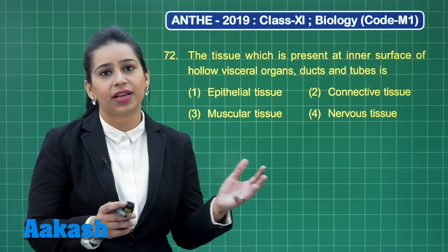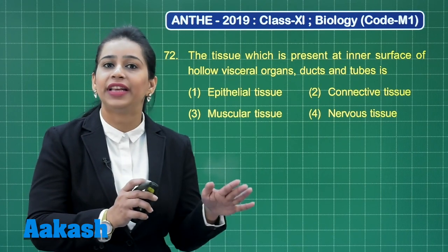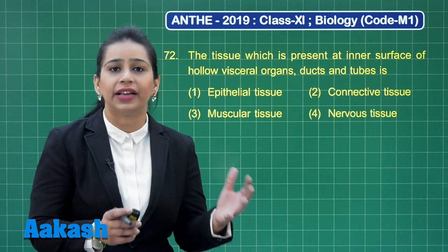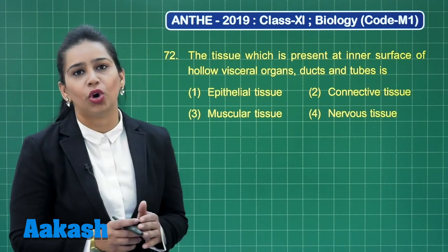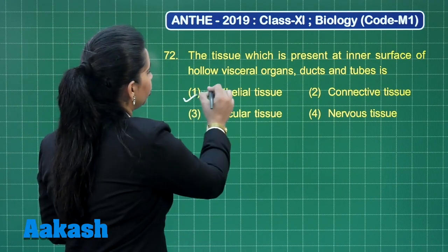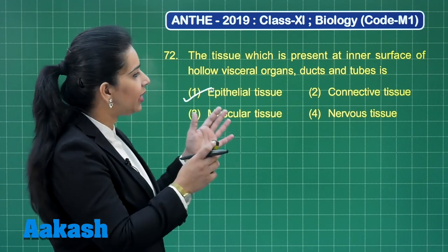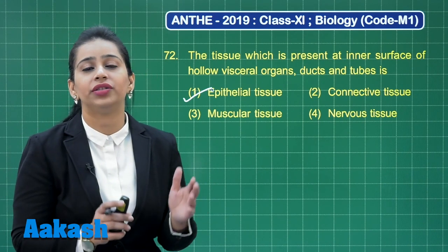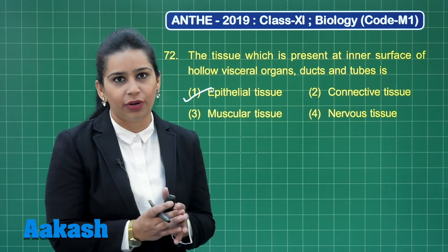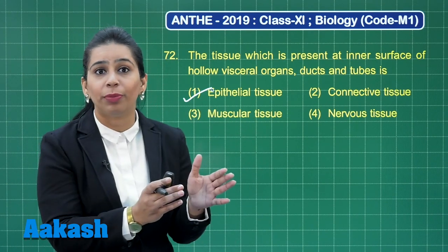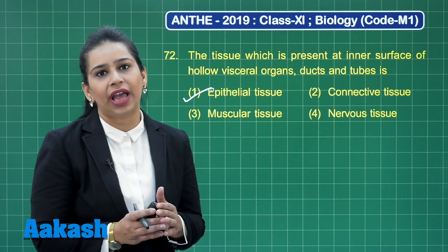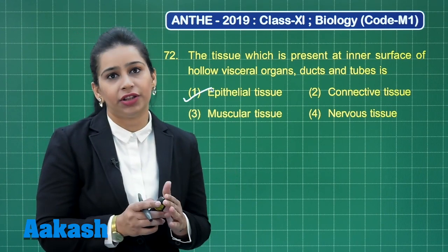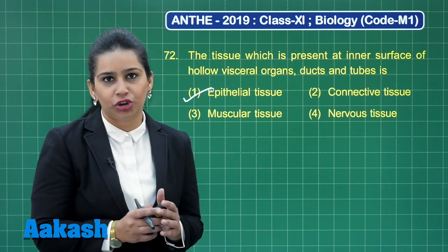For example, the skin is comprised of epithelial tissue which forms the covering, while the lining of hollow visceral organs like the heart, stomach, and lungs is also comprised of epithelial tissue. The correct answer to this question is epithelial tissue. Connective tissue, as its name suggests, is responsible for connecting different tissues and organs in our body. Muscular tissue has the property of contractibility and helps the animal in movement and locomotion. Nervous tissue is responsible for control and coordination in the animal body.